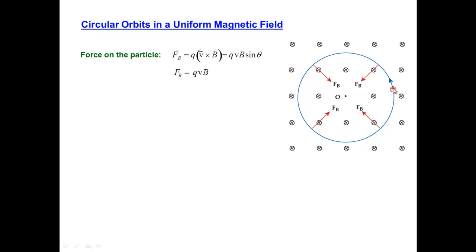Here we have a positive charge moving initially upward in a region where the magnetic field, you can see the tail fins of the arrows, show that the magnetic field is pointing into the page. The force that the magnetic field imparts will be perpendicular to the path all the way around this closed circle. Let's use Newton's second law. That will tell us what the radius of the orbit is.